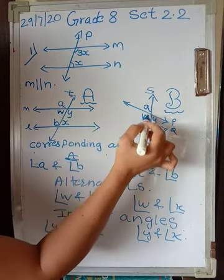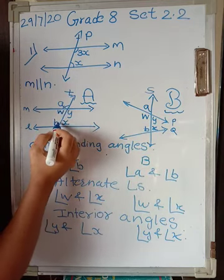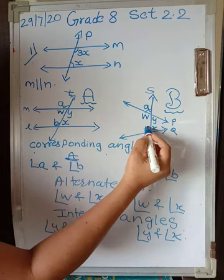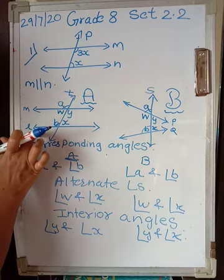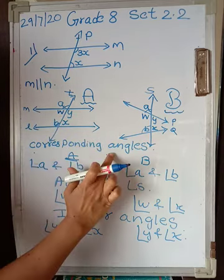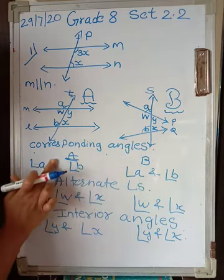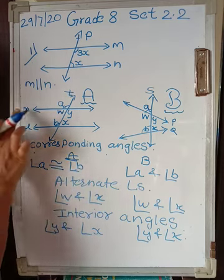In this case, these two are also corresponding angles. Carefully observe: these two appear to be equal in measure, whereas in figure B this angle is very small and this is very big. This indicates a property of corresponding angles: when two lines which are parallel to each other are cut by a transversal, the pair of corresponding angles are always congruent. So angle A will be congruent to angle B when lines are parallel.